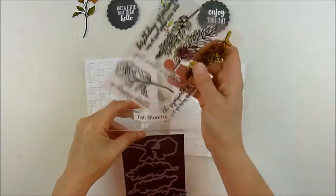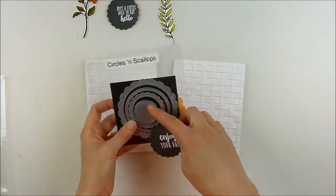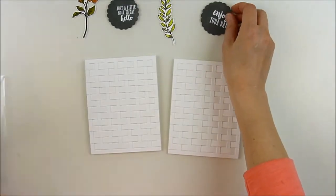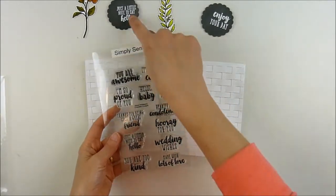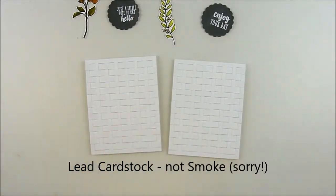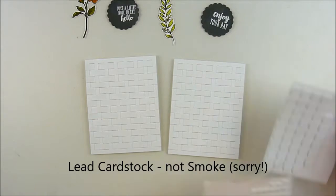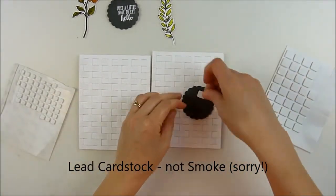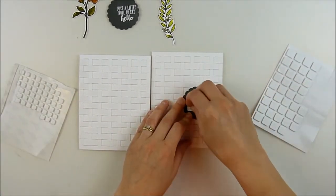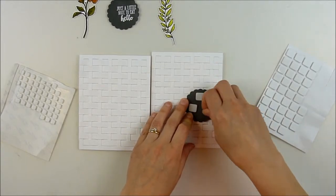I'm using Tall Blooms that I've already stamped, cut, and colored, and then Circles and Scallops to die cut a piece of smoke cardstock. I've stamped and heat embossed my sentiments from Simply Sentiments. I love all the sentiments on that stamp set—just a great all-occasion set to go with whatever you need.